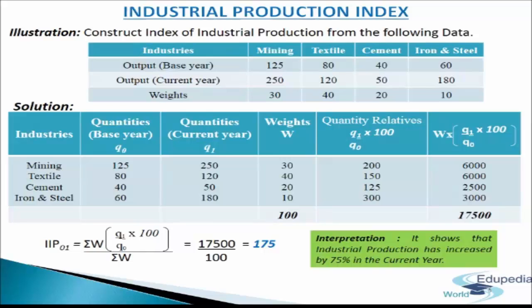Now we apply the formula: IIP₀₁ = (σW × (Q₁/Q₀ × 100)) / σW = 17500 / 100 = 175. This shows that industrial production has increased by 75% in the current year. This is how we calculate the industrial production index number.